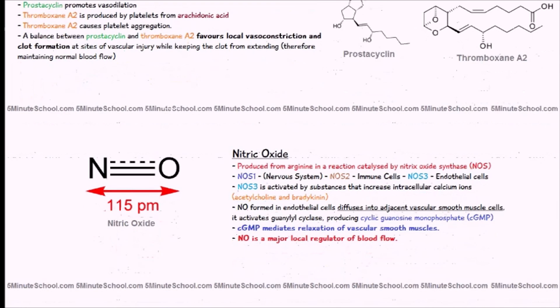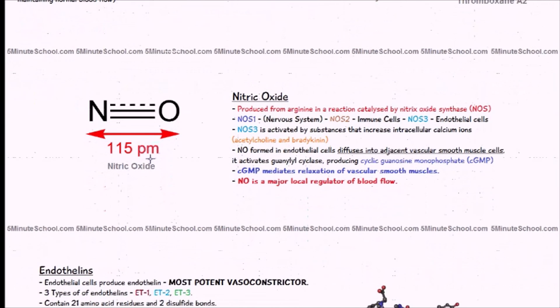So that's one way nitric oxide affects blood flow — just to summarize.